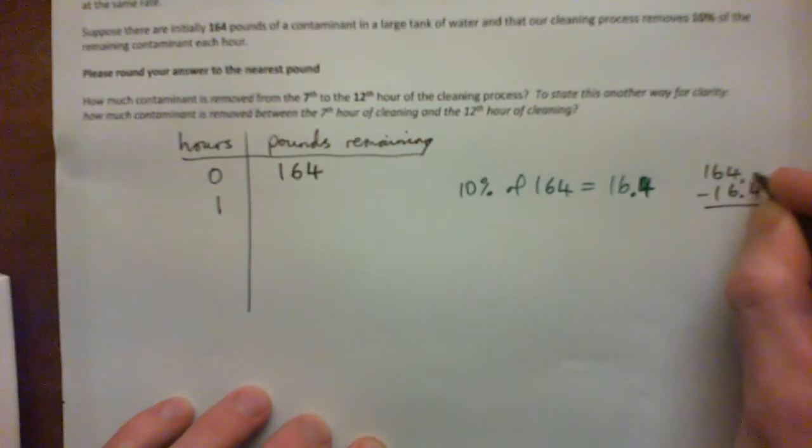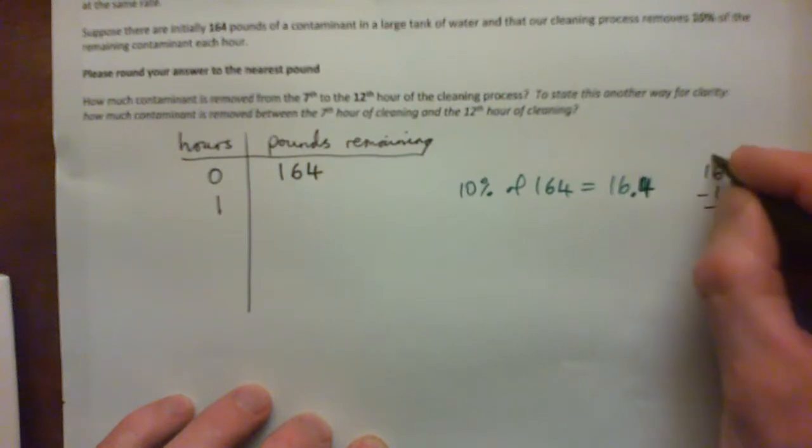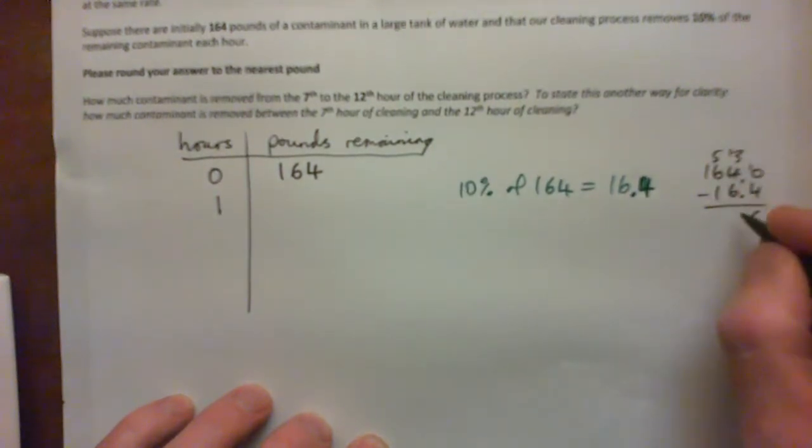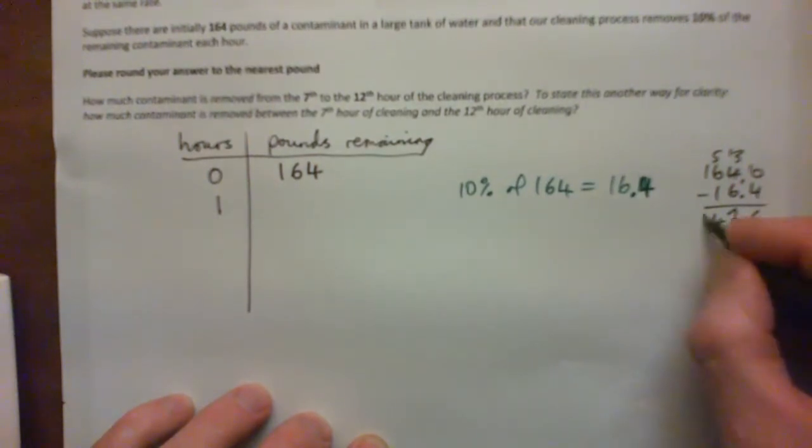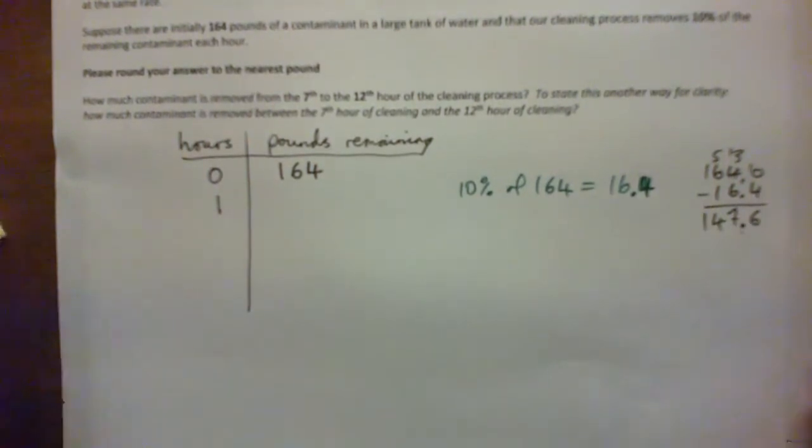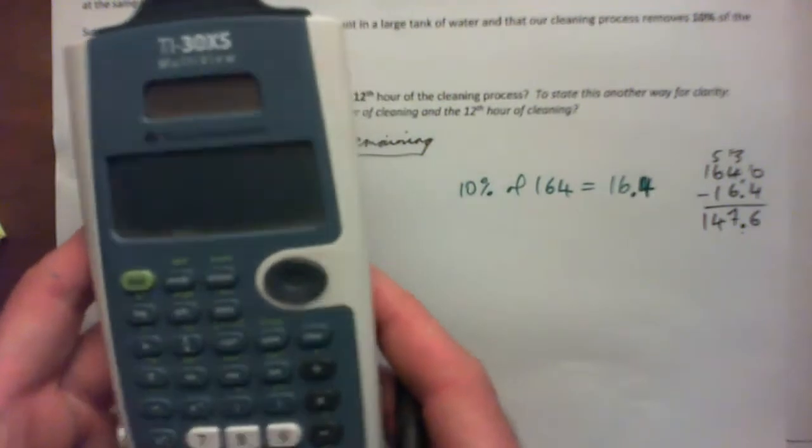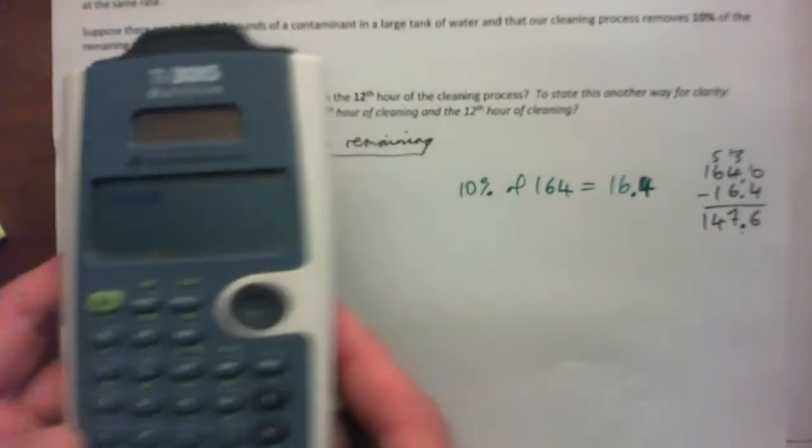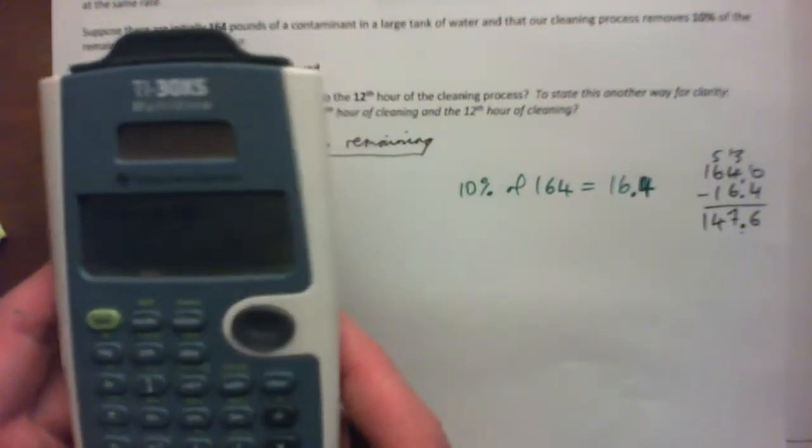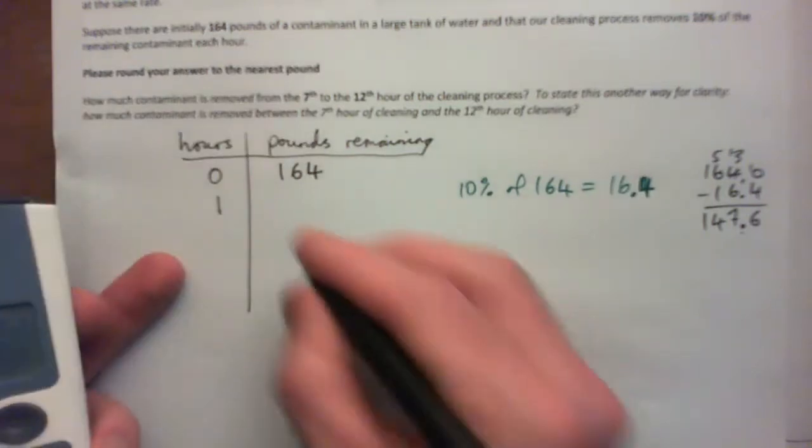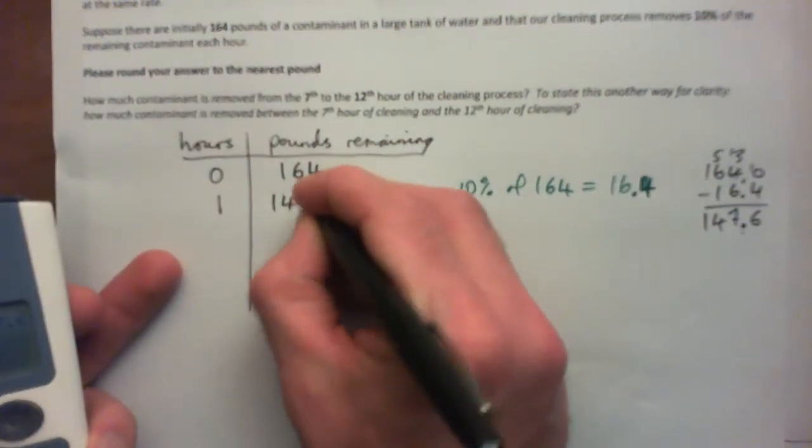We have to get what that is. That's a 10, that's a 3, it becomes a 5, that's a 13. Let's see, 7. So 147.6. So 164 minus 16.4, 147.6. So after one hour, 147.6.